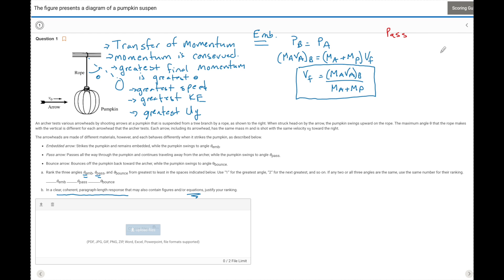Next, let's look at pass through. So once again, P before equals P after. We have M_A V_A before. That is not going to change. But now it's going to pass through and we're going to have the mass of the arrow, velocity of the arrow after, plus the mass of the pumpkin, velocity of pumpkin. So now the final velocity of the pumpkin after is going to be equal to M_A V_A minus M_A V_A after. So this would be final, this would be initial, divided by the mass of the pumpkin.